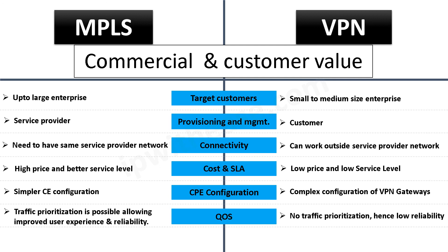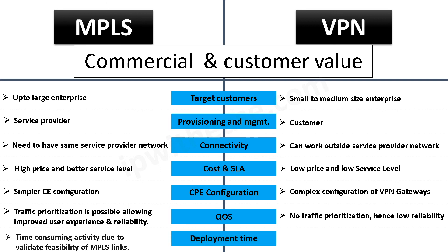Last on the list is deployment time. MPLS link feasibility is time-consuming and may take weeks, while VPN only requires public IP reachability and therefore deployment time becomes much faster.